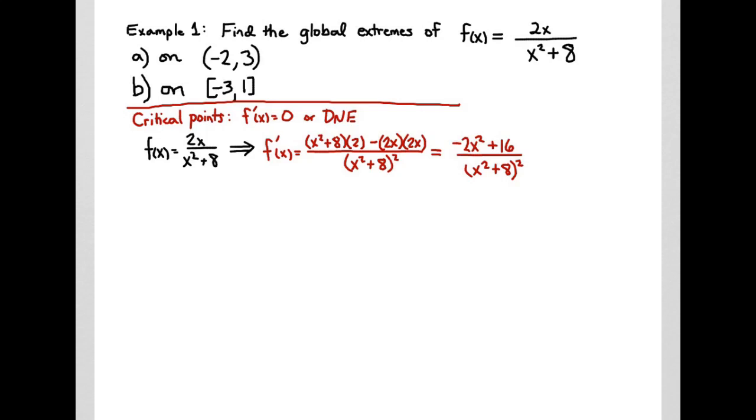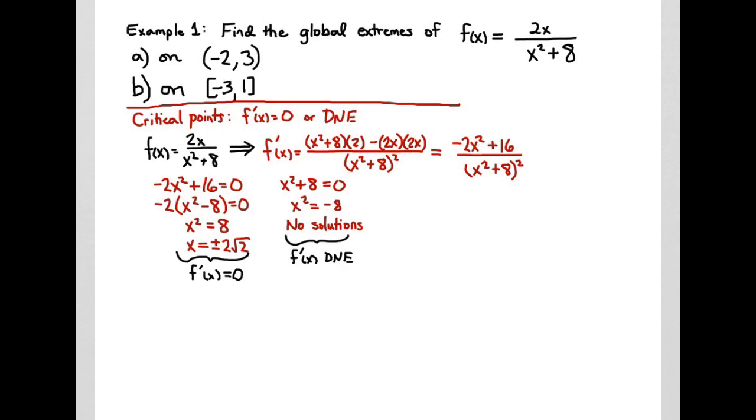Once we have the derivative, we need to find where that's 0 or does not exist. To see where it's 0, we look at the numerator, -2x² + 16, and solve the equation. To find points where the derivative doesn't exist, we explore where is the denominator equal to 0. When I solve for the numerator equals 0, I get x² = 8, which gives us ±√8, or ±2√2. When I try to make the denominator 0, I get x² = -8, which has no solutions. So there aren't any points where the derivative does not exist.